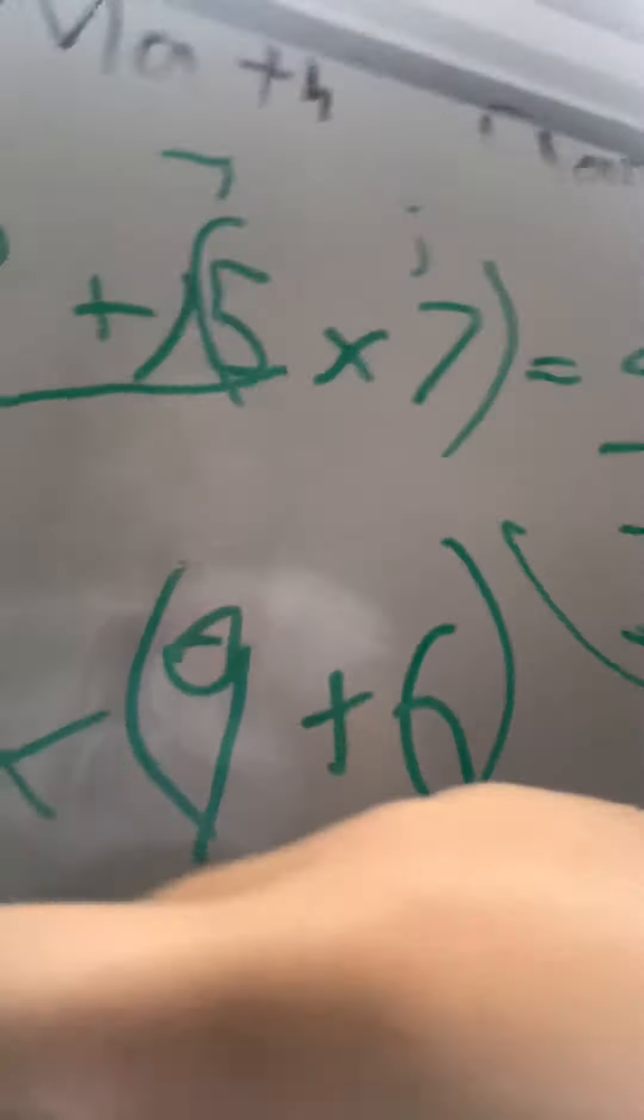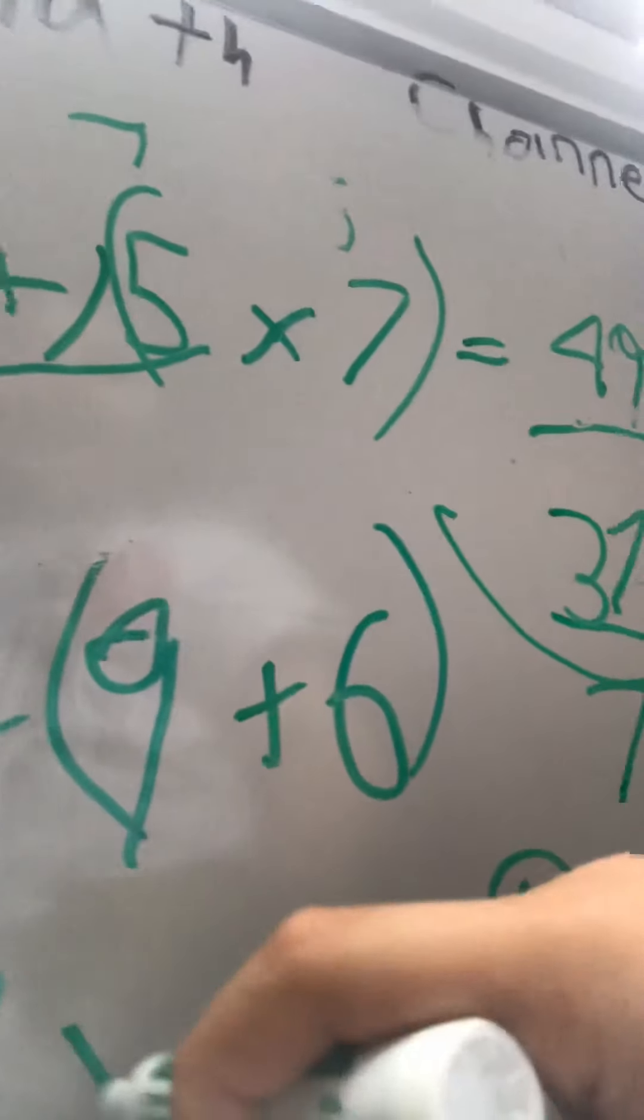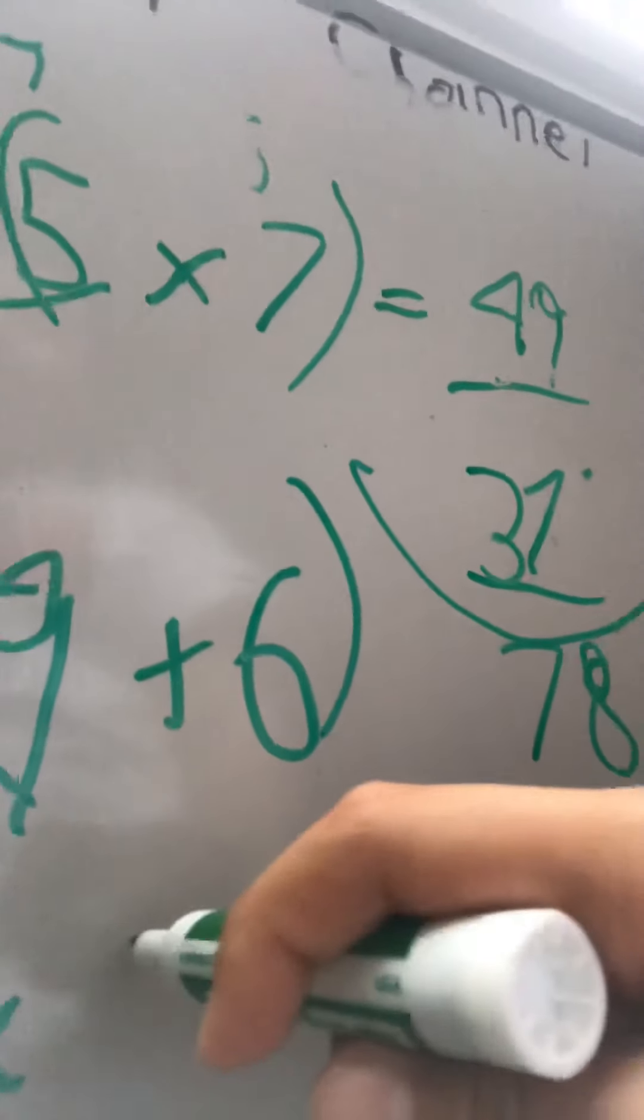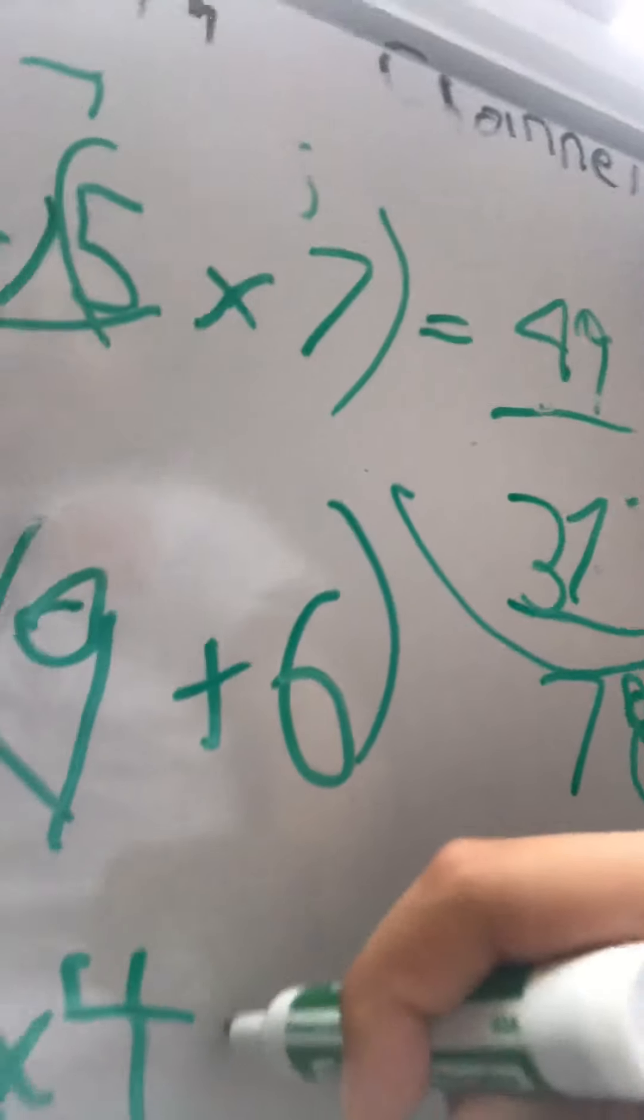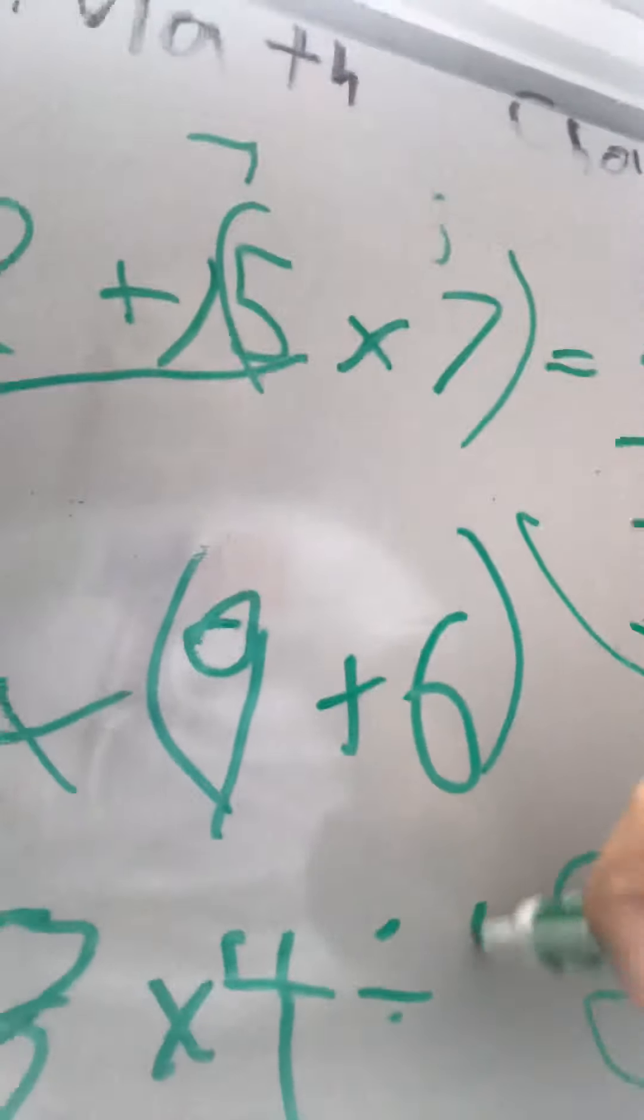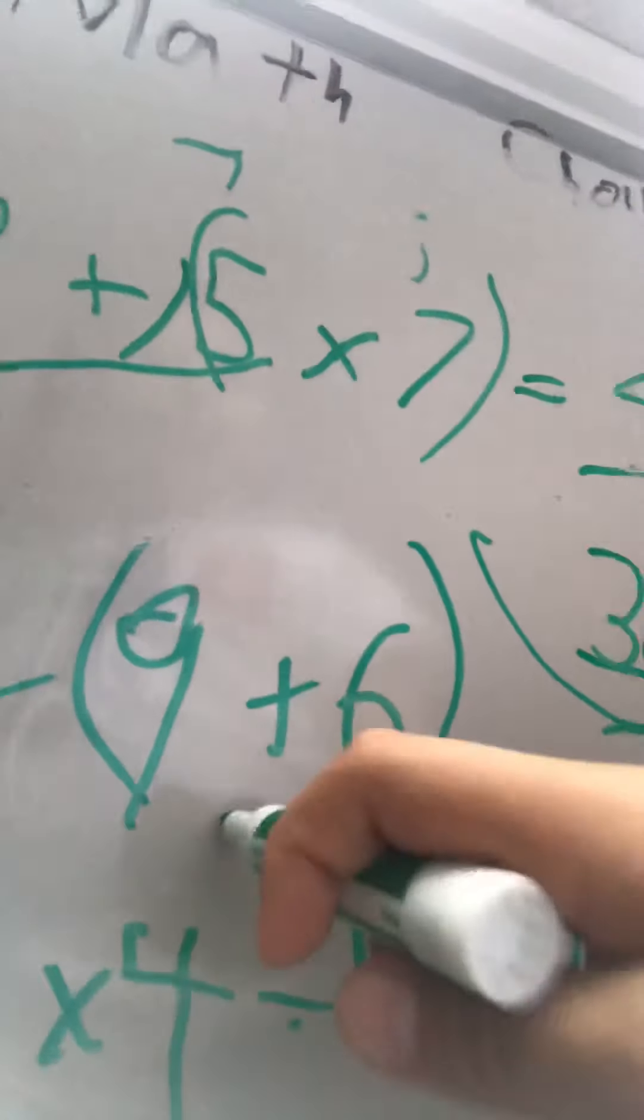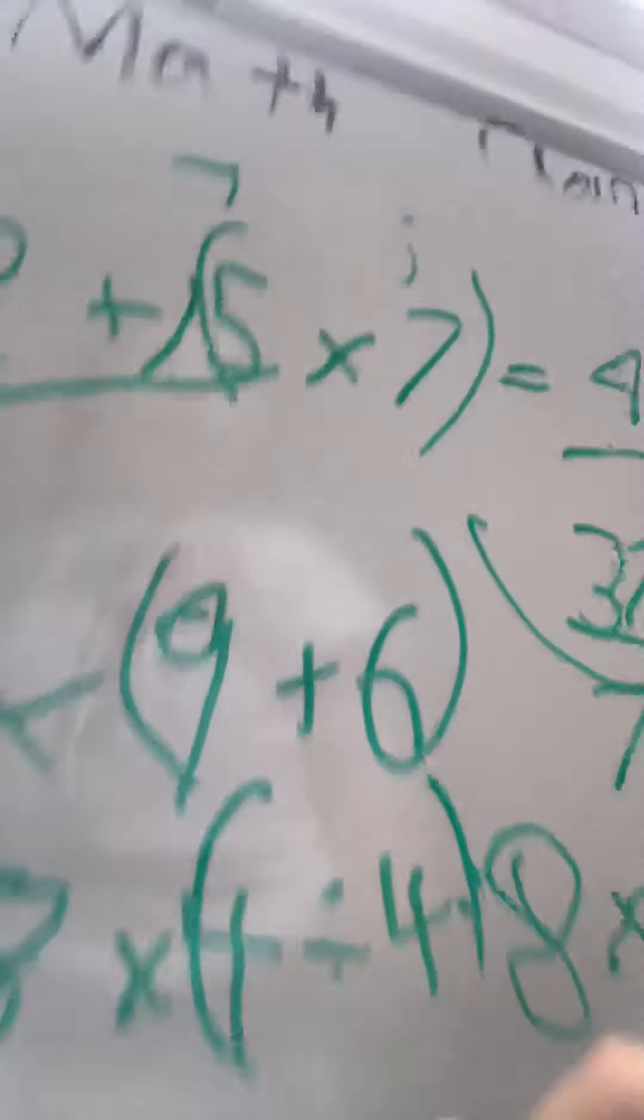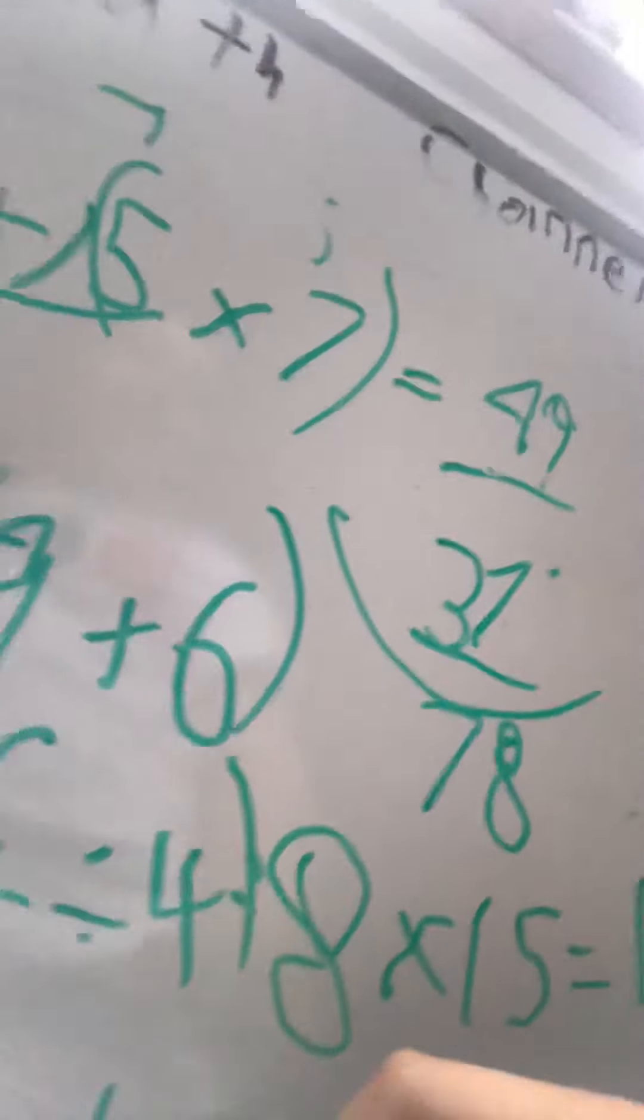Okay guys, this is going to be the last one. This is going to be 8 times 4 divided by 4. Okay. We could either do it this way. 4 divided by 4 is 1. 8 times 1 is 8.